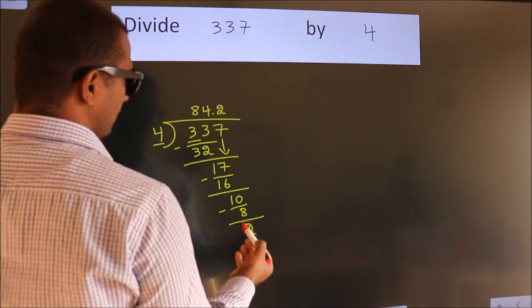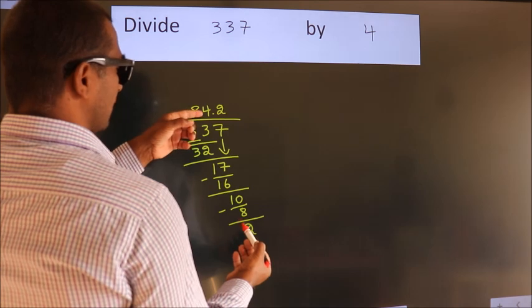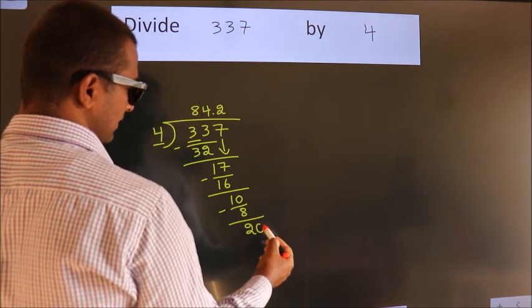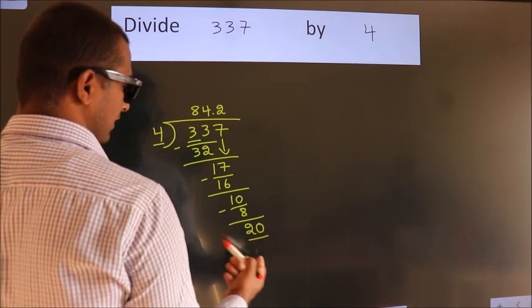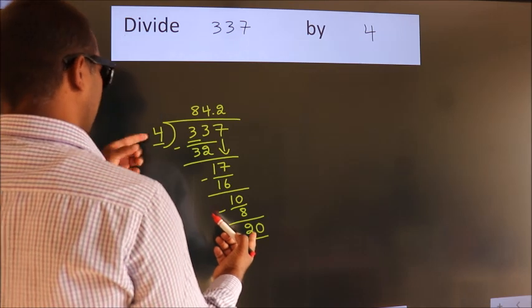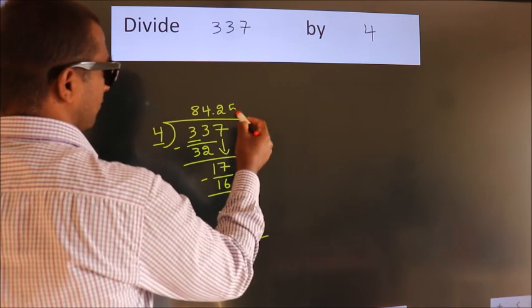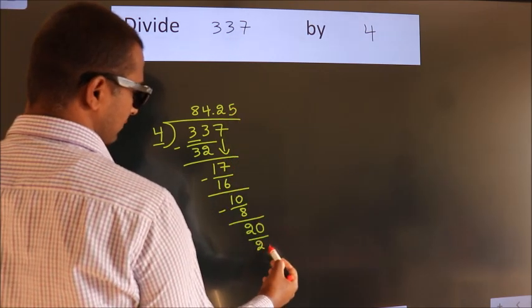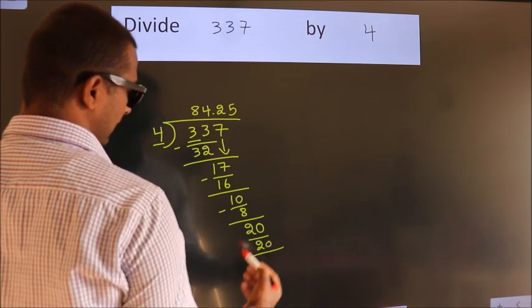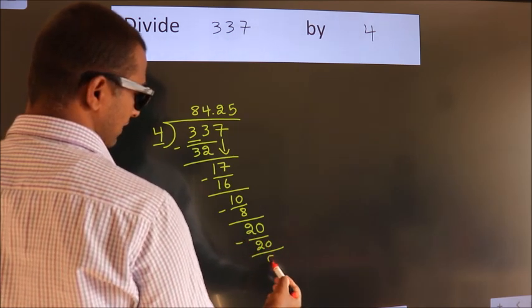After this, we already have the decimal. So, directly take 0. So, 20. When do we get 20 in 4 table? 4, 5, 20. Now, we subtract. We get 0.